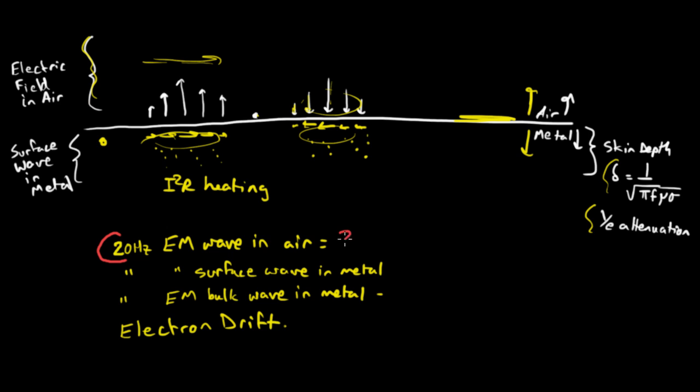How fast does that 20 hertz electromagnetic wave travel in air? Well, the answer is just the speed of light in air, 3 times 10 to the 8th meters per second. How fast does that electromagnetic wave travel in the surface wave of the metal, so this part here? Well, it travels fast, and almost the speed of light, but not quite, so it's going to be less than 3 times 10 to the 8th meters per second.